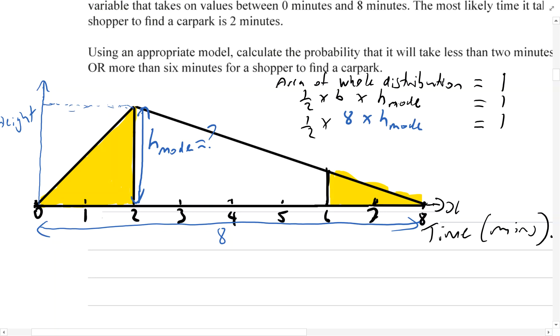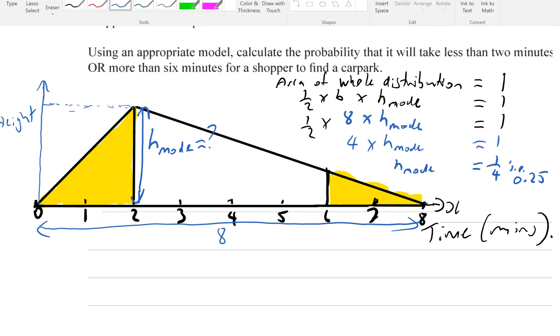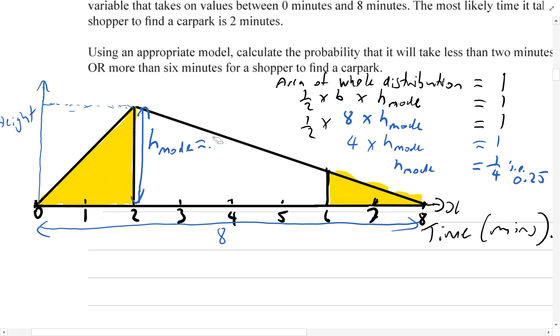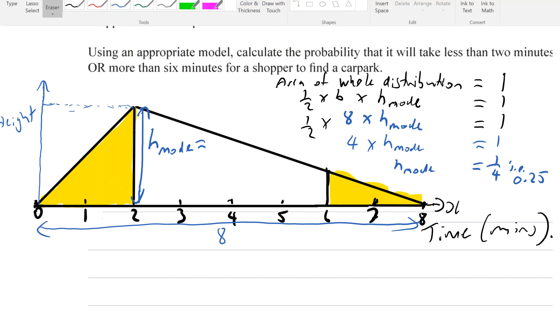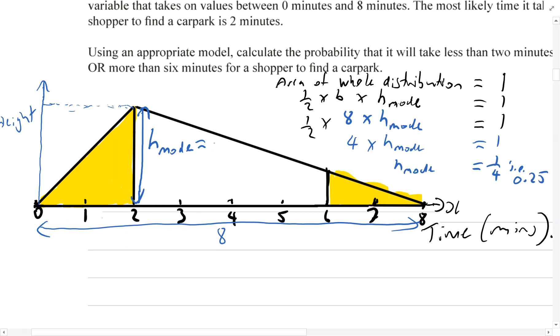So let's work out the value of that. So half of eight is four. So four times the height at the mode equals one. And then dividing one divided by four, we get 0.25 or one quarter. So that means we can now write that in. The height at the mode is 0.25.